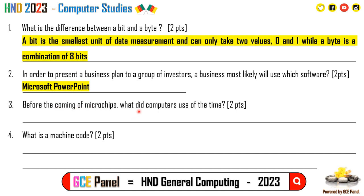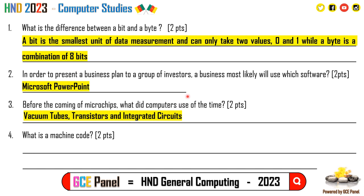Section B, Question 3: Before the coming of microchips, computers used vacuum tubes in the first generation, then transistors in the second generation, and integrated circuits in the third generation. Before the fourth generation microchip era, these were the technologies computers used. Any of these answers should earn you two points.